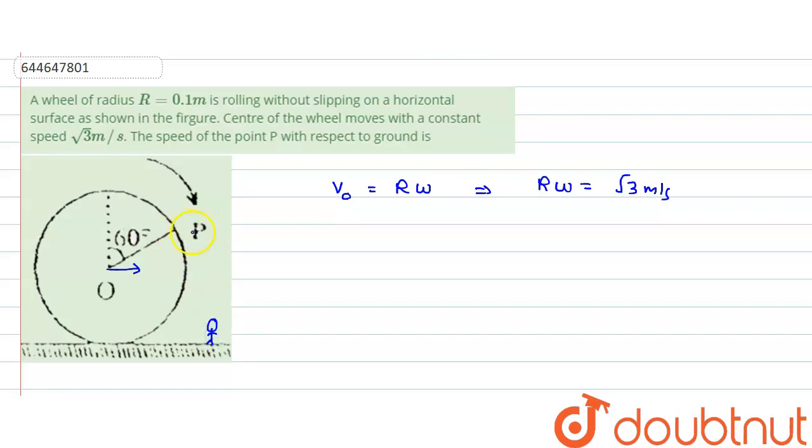What are the components which he would be seeing according to which P would be moving? One would be the same velocity as the velocity of center in the forward direction, but it is also rotating, so there would be a velocity which would be tangential at this point.